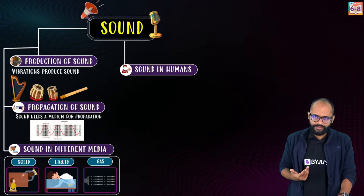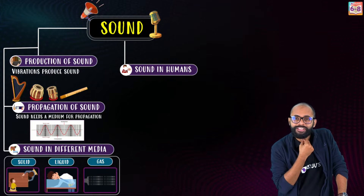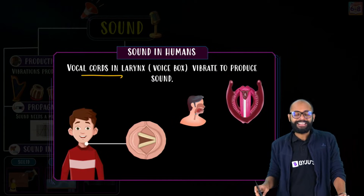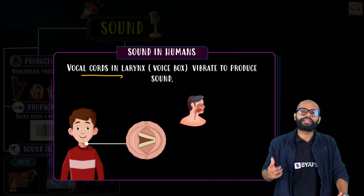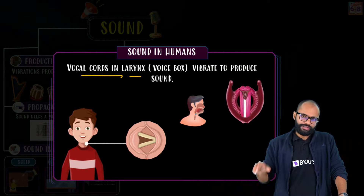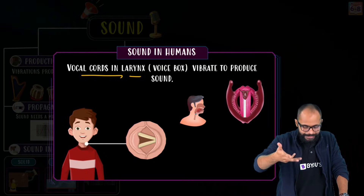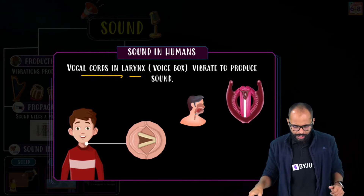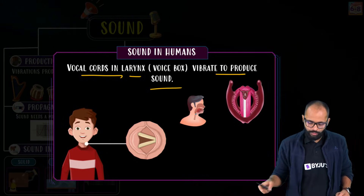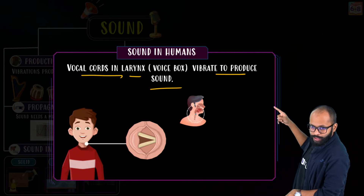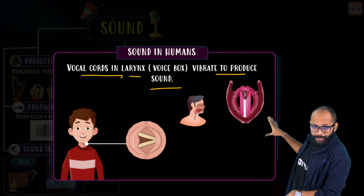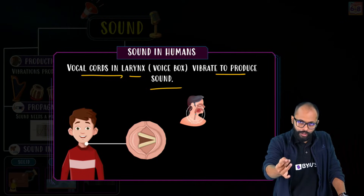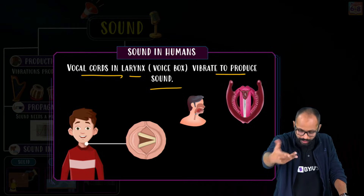Sound in humans: I am speaking because something is vibrating. What is vibrating? Vocal chords in the larynx. The larynx is the voice box. Inside the larynx there are vocal chords, which look like two flaps. Air passes through these flaps — they vibrate to produce sound. That is how sound is produced in humans.